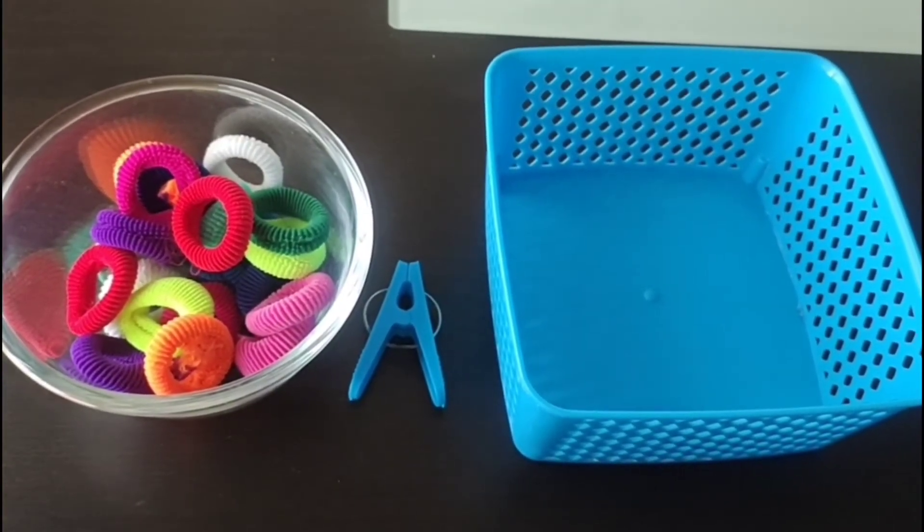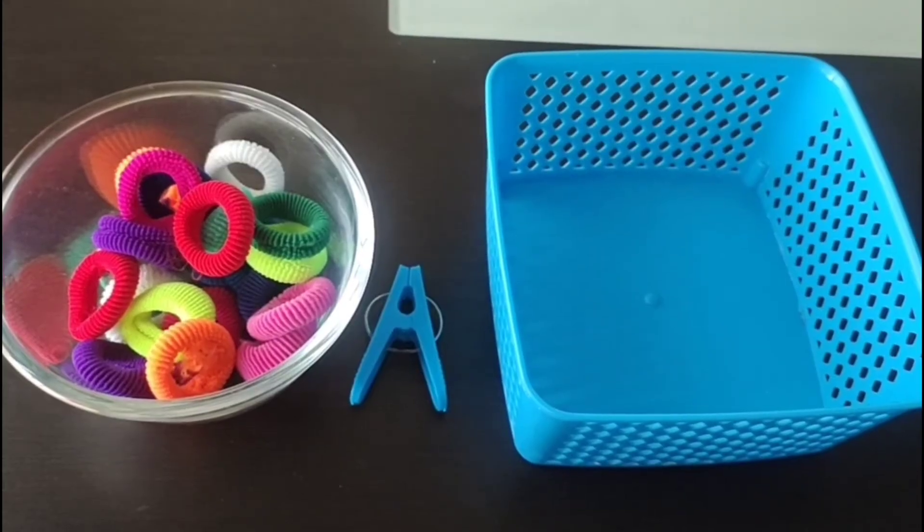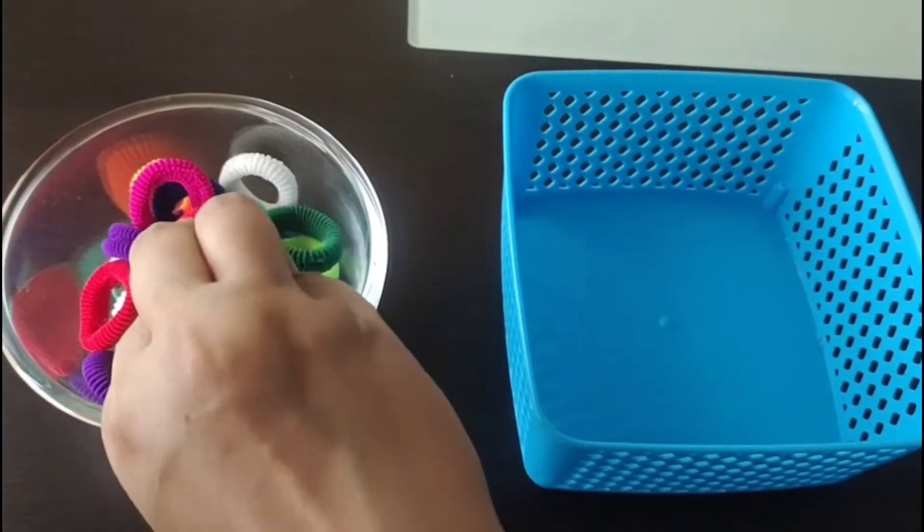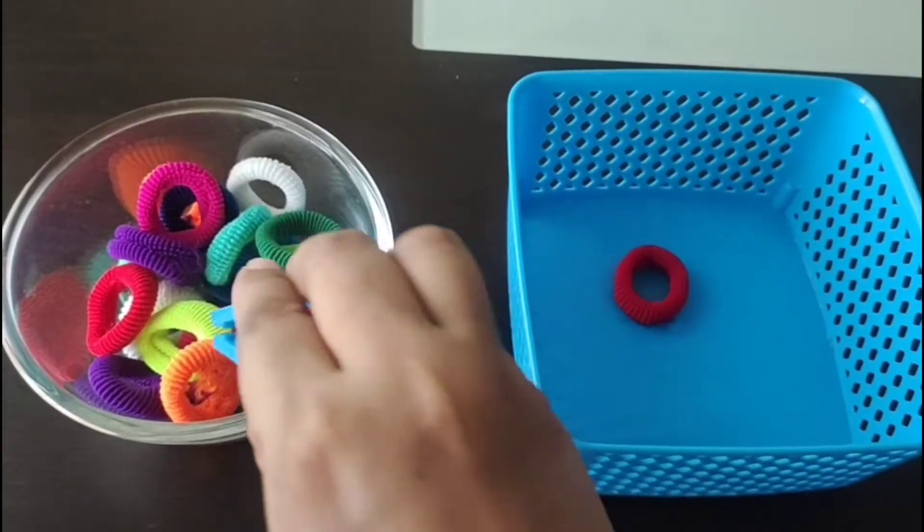For the last and final one, take two bowls and put elastic bands in one of them. Ask the child to pick the bands with cloth pegs and put them in the empty bowl.